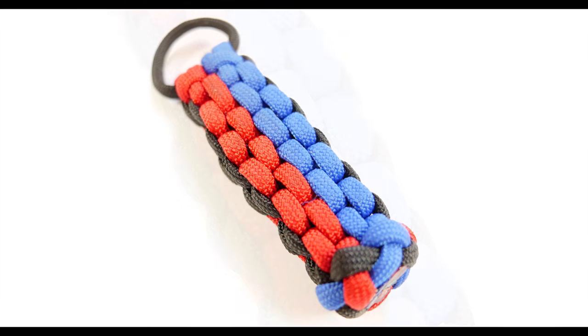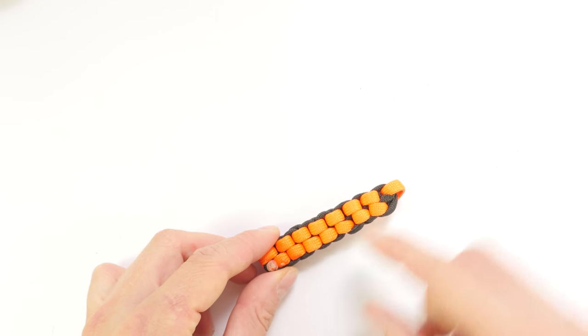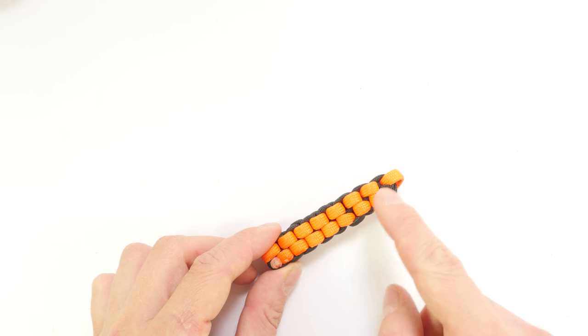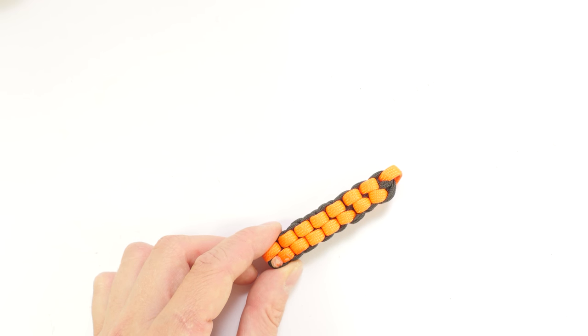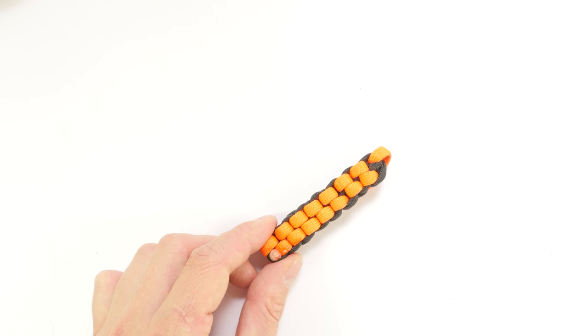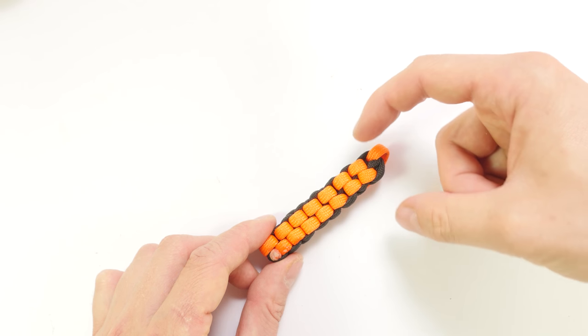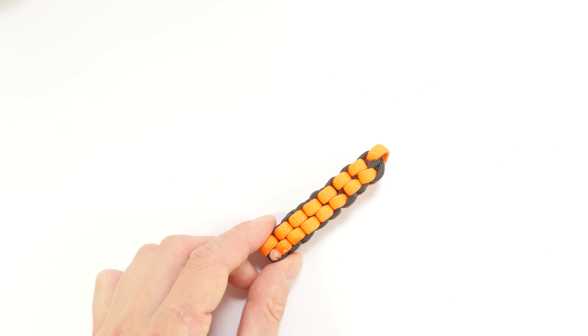In today's video I'm going to show you how to tie the double box knot. The regular box knot is a knot that you can stack in order to make a box knot sinnet. This can be used to make keychains, lanyards and things like that. The double box knot is basically twice as wide. We can use it to make more of a colorful keychain, lanyard or any other project. So it definitely has its uses and I'm going to show you how to tie it in this video.